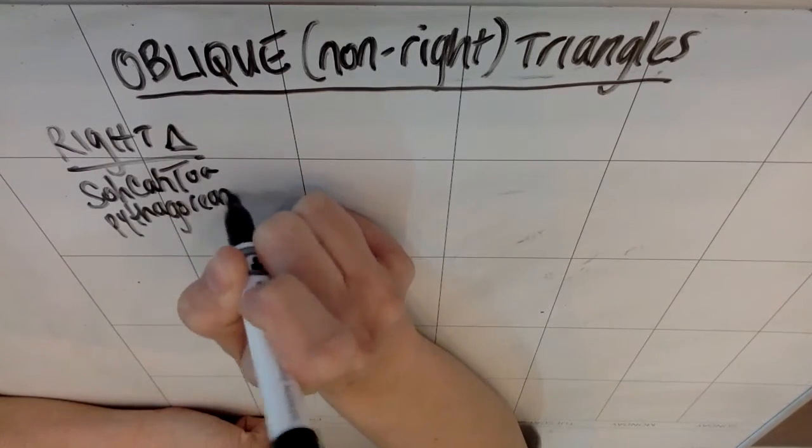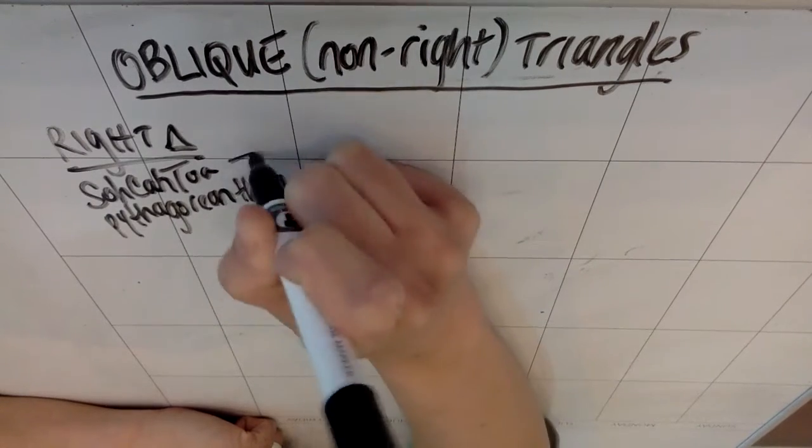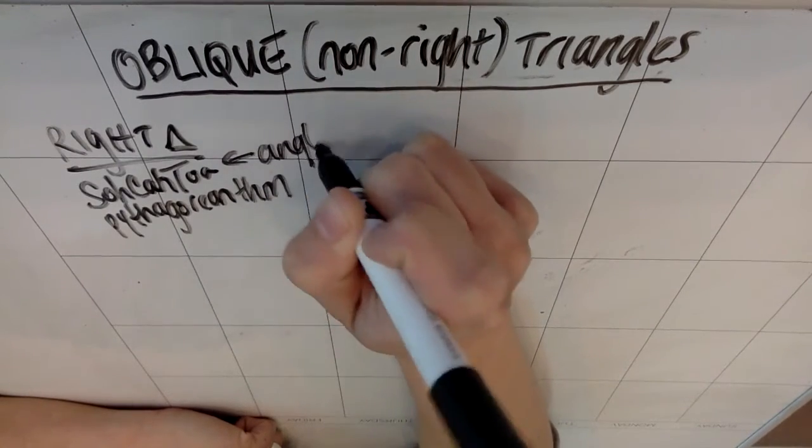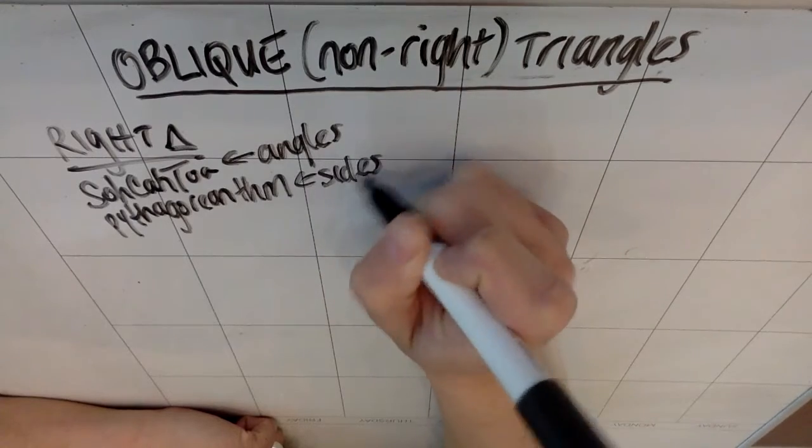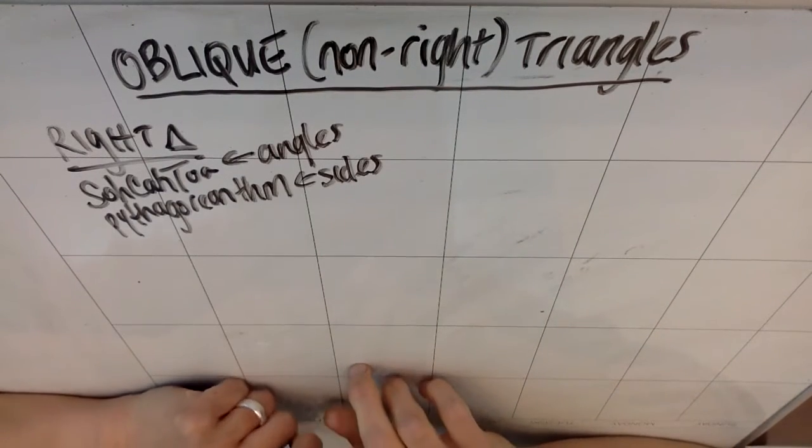So we use SOCA-TOA anytime we're looking at things that relate to angles. We use Pythagorean theorem anytime we're looking at things that relate to sides. And that's great if you have a right triangle.